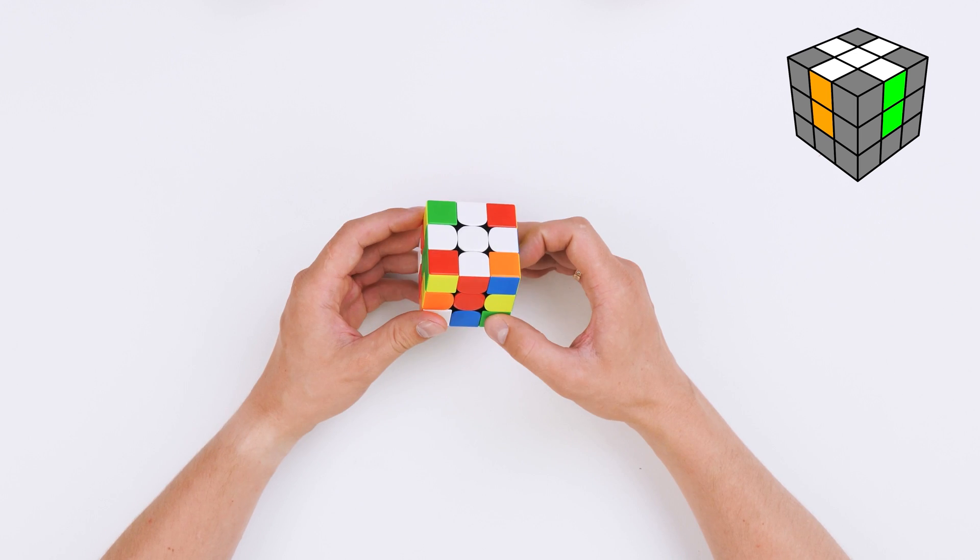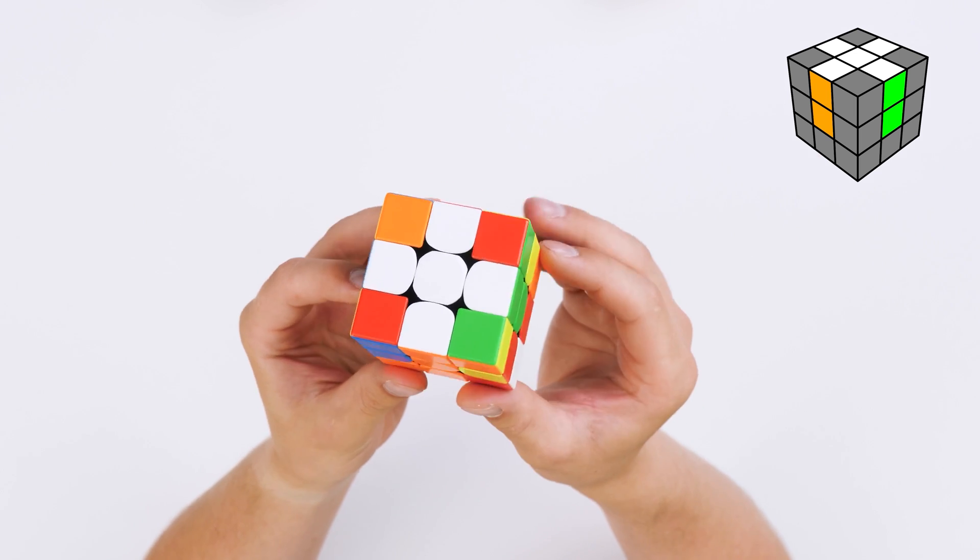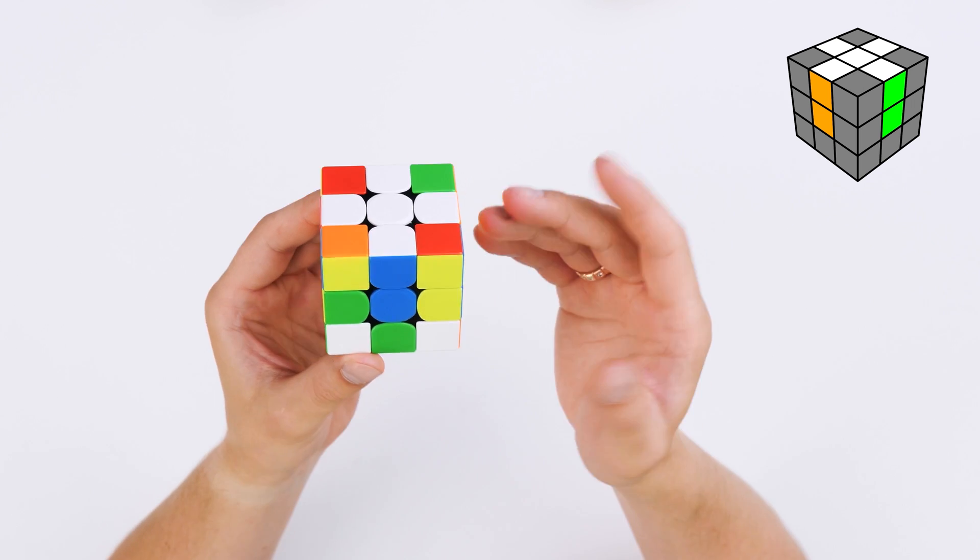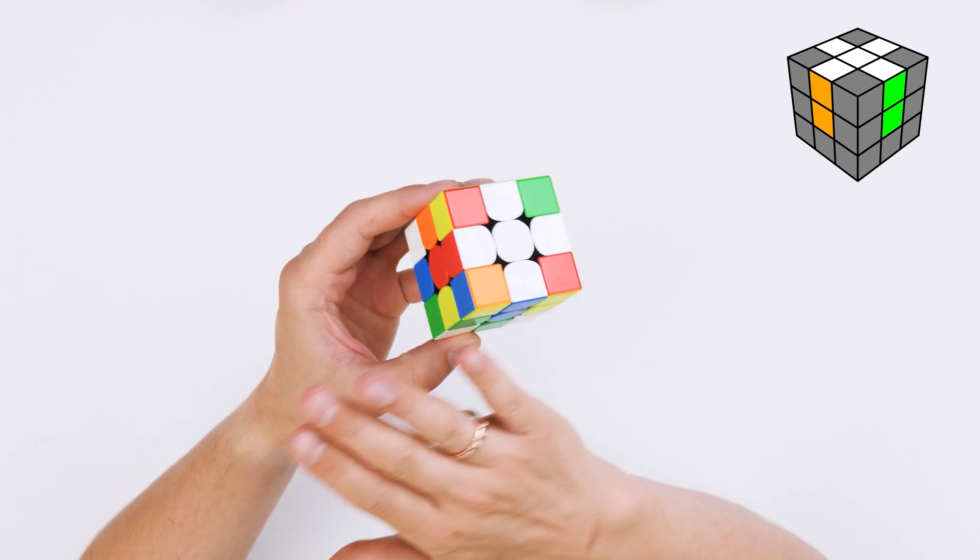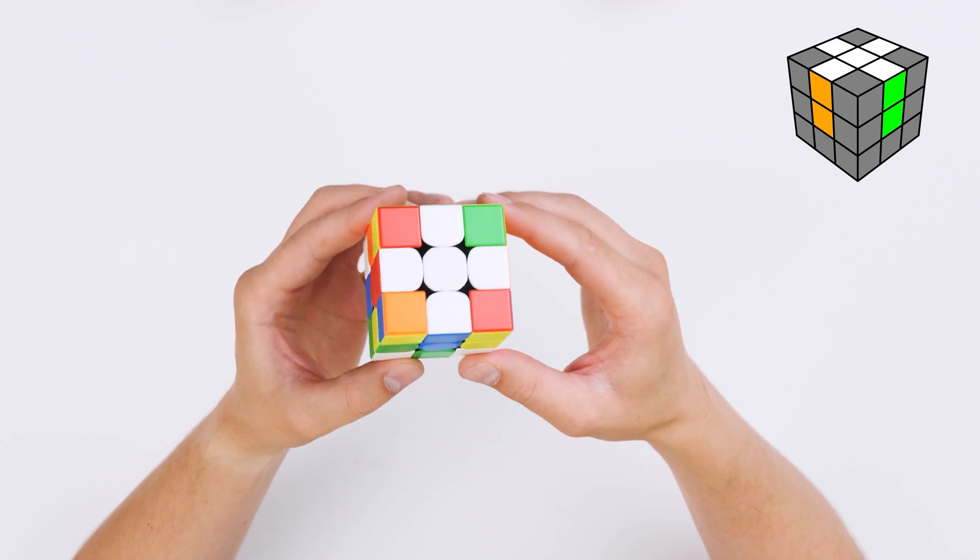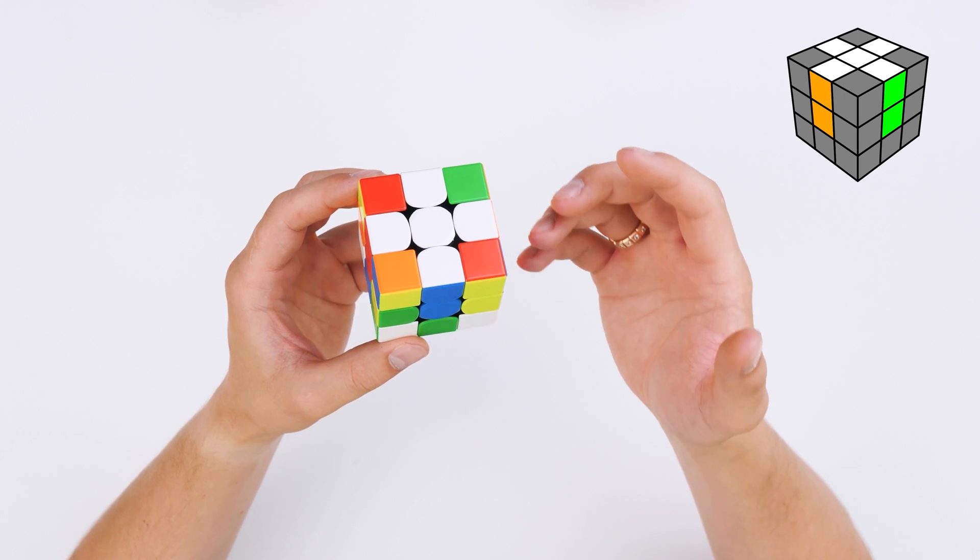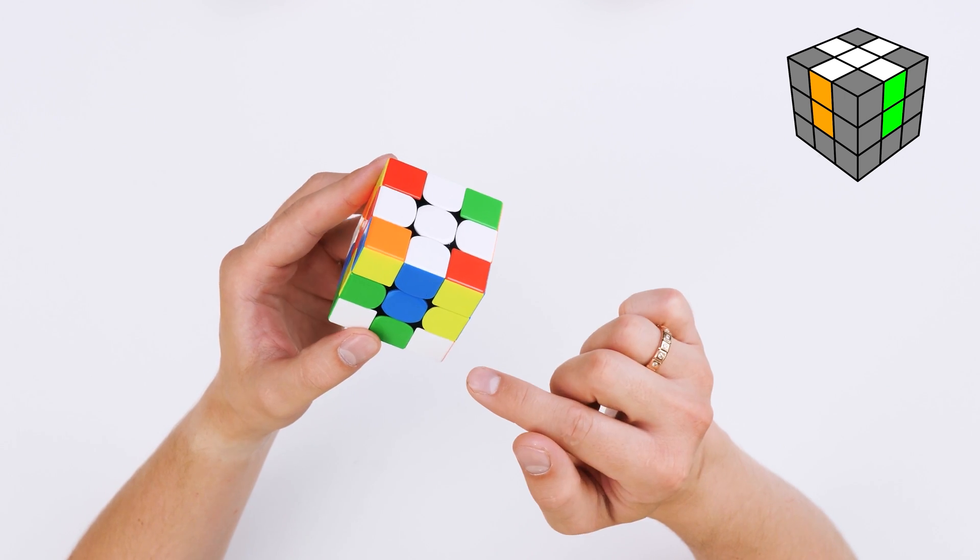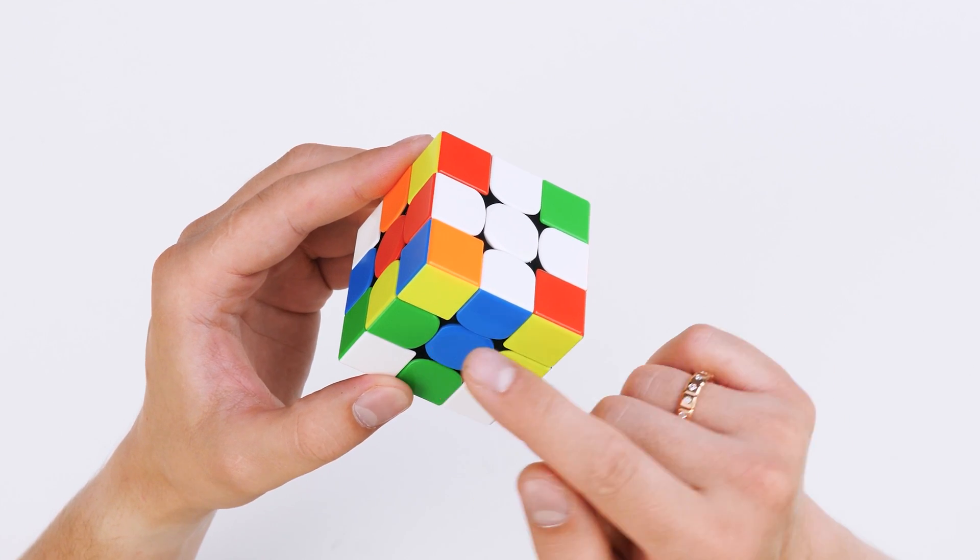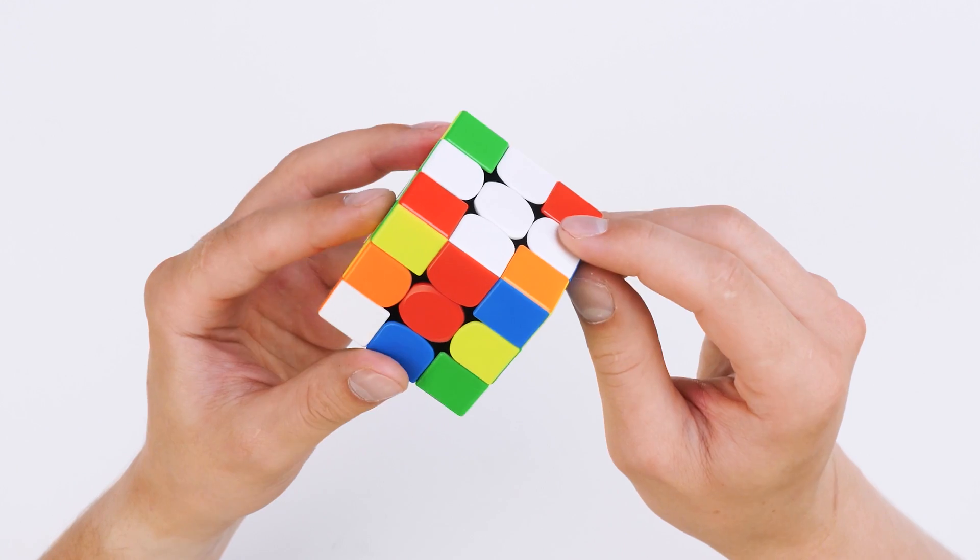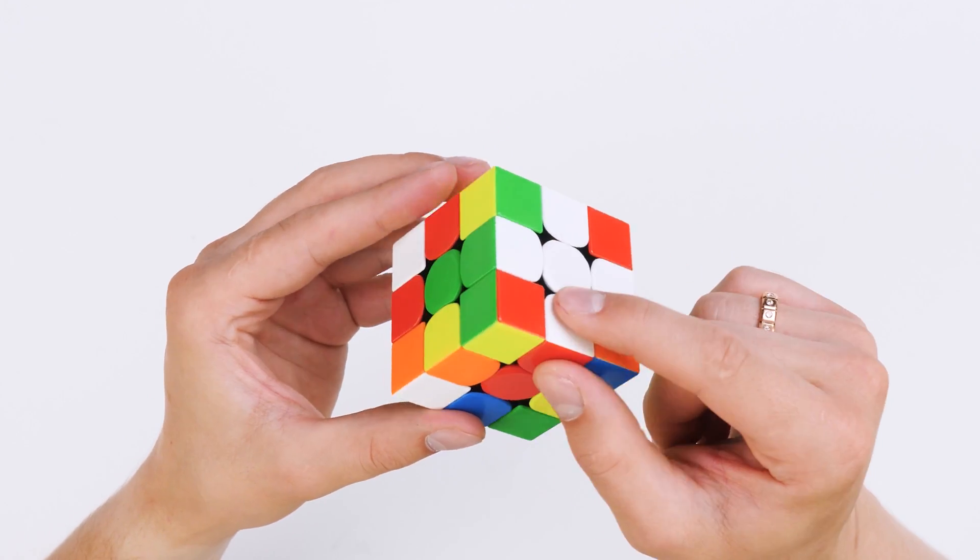The first stage is the cross. We need to start solving Rubik's Cube from the white cross, which looks like this. Note that it consists only of edges. We ignore corners at this stage. The correct cross will be when all four edges are the same color as the center. For example, the blue-white edge coincides with the blue and white center. Red and white coincides with red and white center.